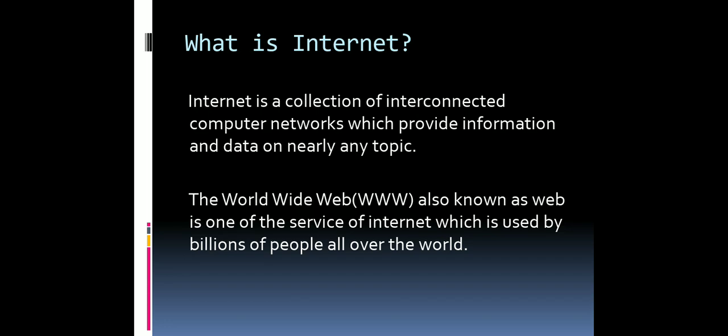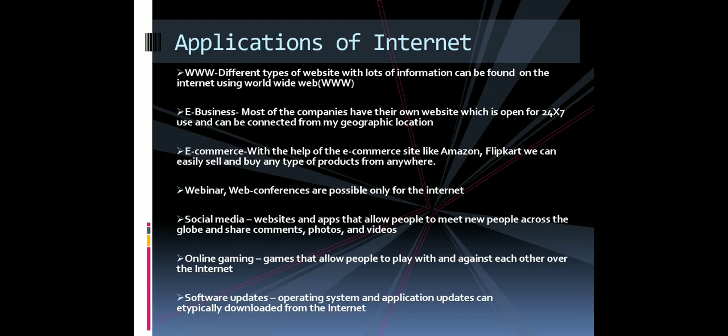Now let us discuss some of the other applications of the internet. The first one is the World Wide Web, which we have already discussed — different types of websites with lots of information can be found there. Now, e-business: nowadays every business has its own website which is open 24/7 for their customers and employees. They can connect with each other and do their business and related work even from any geographic corner of the world, and they can share information in seconds.